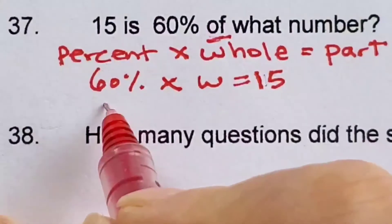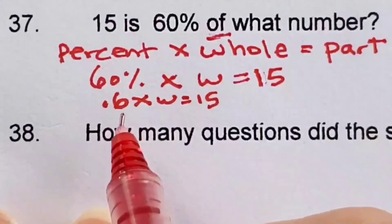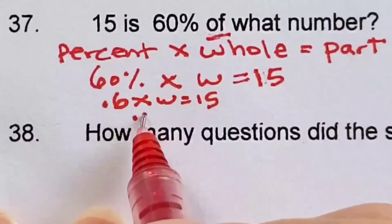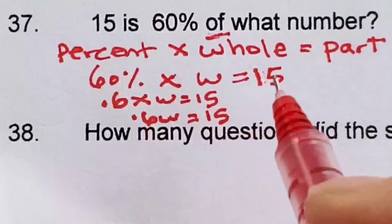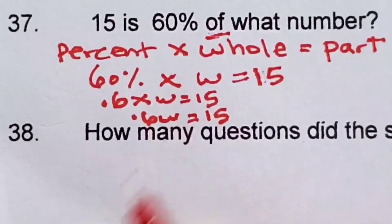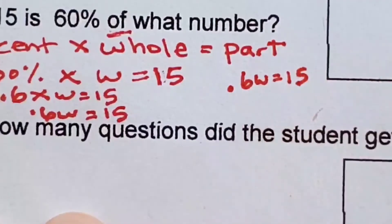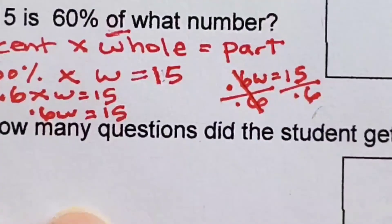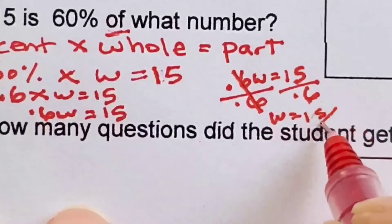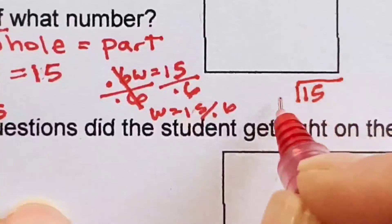We'll change 60% to 0.6, so 0.6 times W equals 15. Joining them: 0.6W equals 15. At this point you can say 0.6 times what equals 15, but that's a little difficult, so I would just divide through by 0.6 on both sides. My 0.6s cancel out and now I have W equals 15 divided by 0.6.